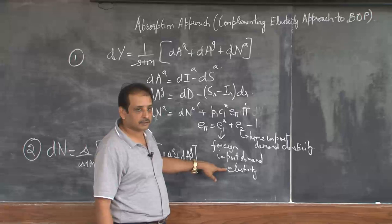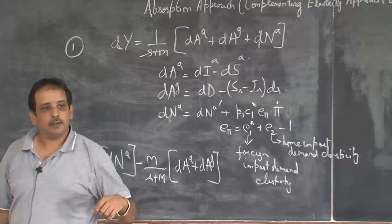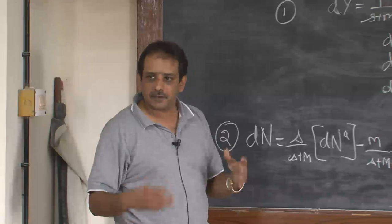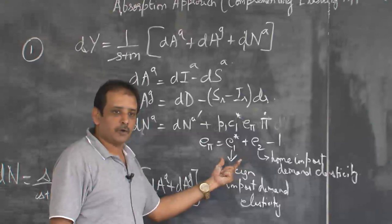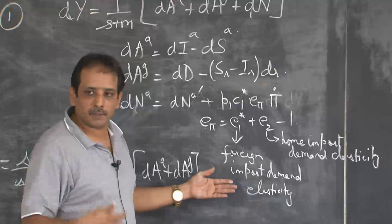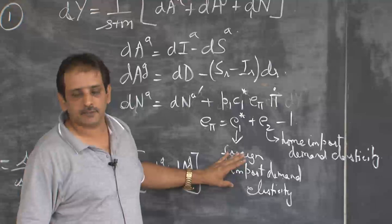It is proper to write this as foreign import demand elasticity, because you may get confused. Whatever is your exports, the demand for it — yesterday I called it export demand elasticity. But I thought that for your understanding it will be better to write foreign export demand elasticity as foreign import demand elasticity. There was some confusion yesterday, so keep writing this as foreign import demand elasticity. Either you call it this, or you can call it home exports demand.